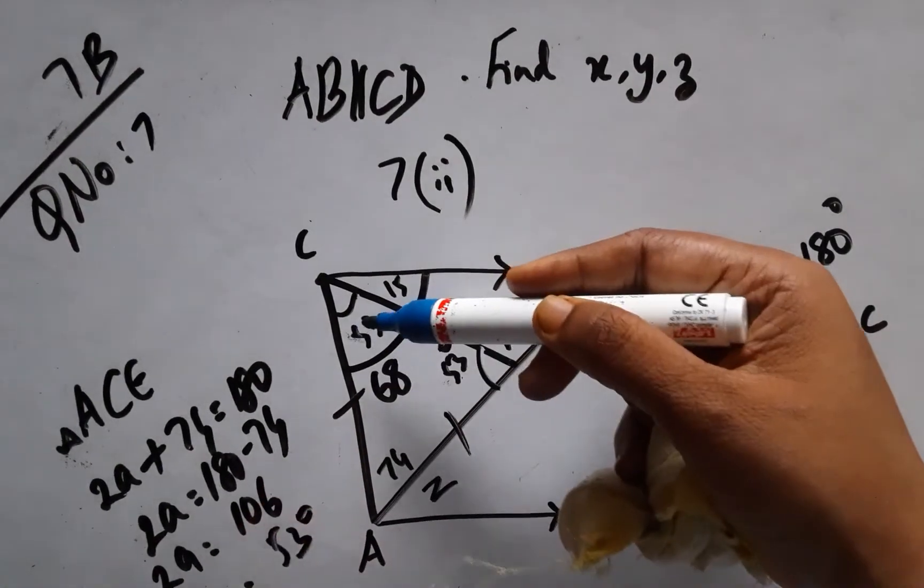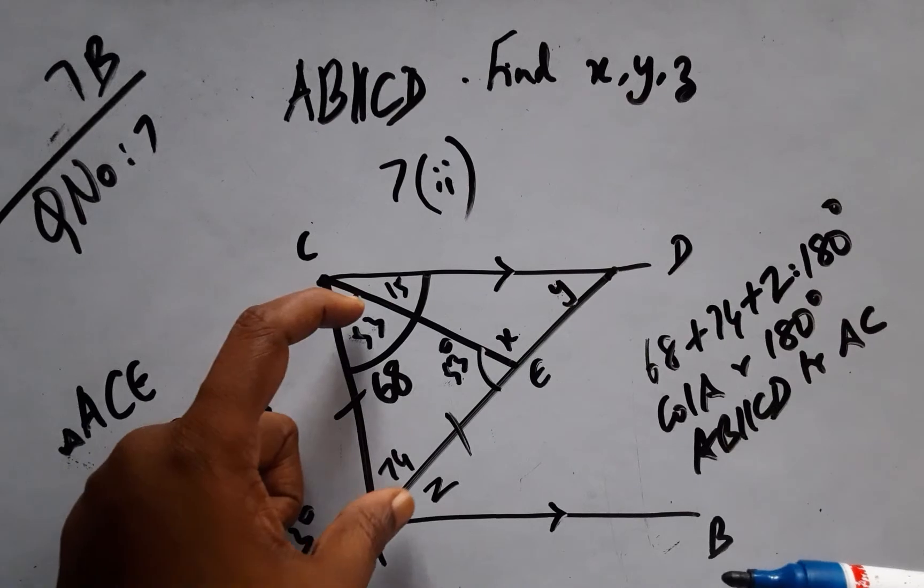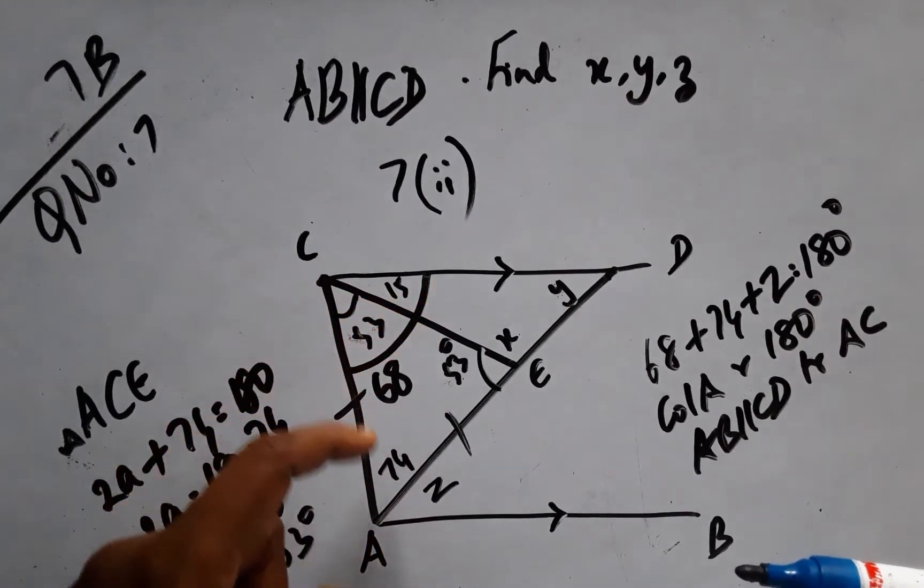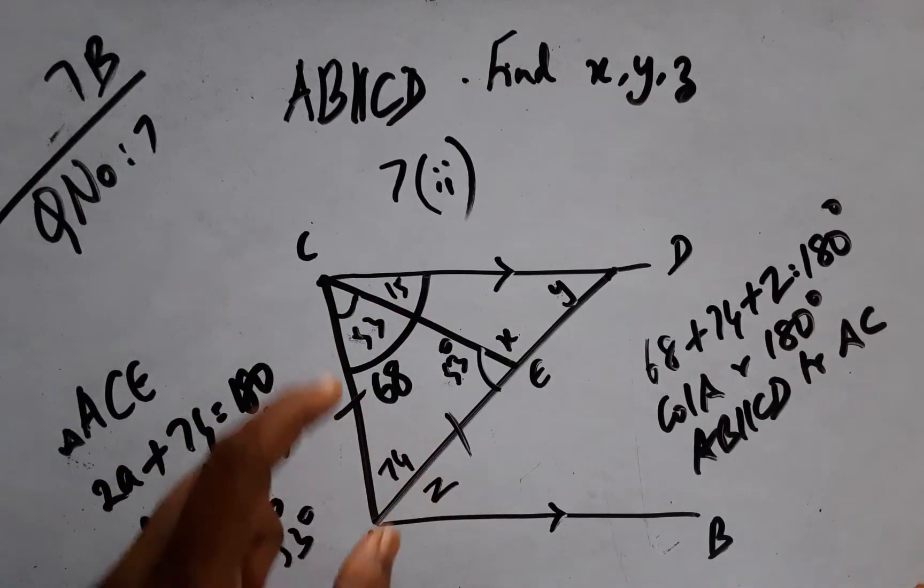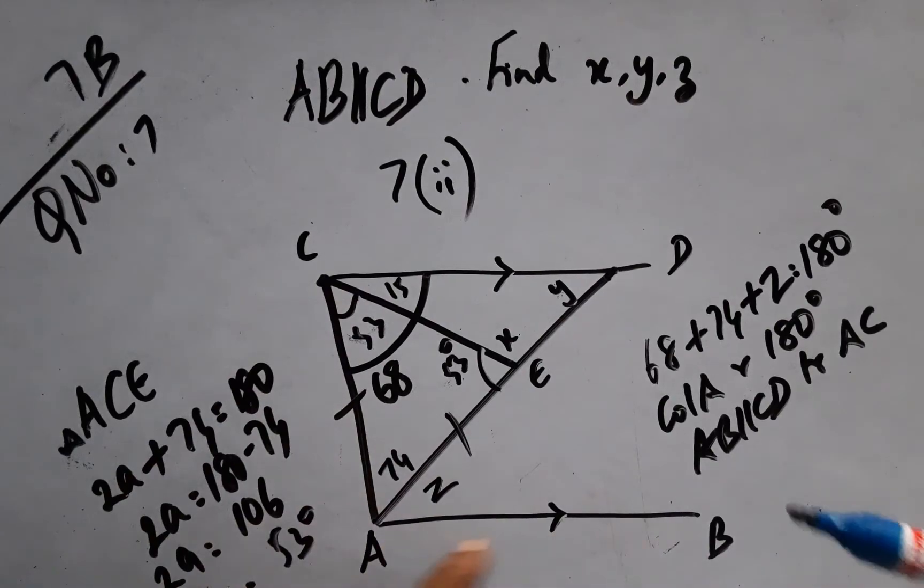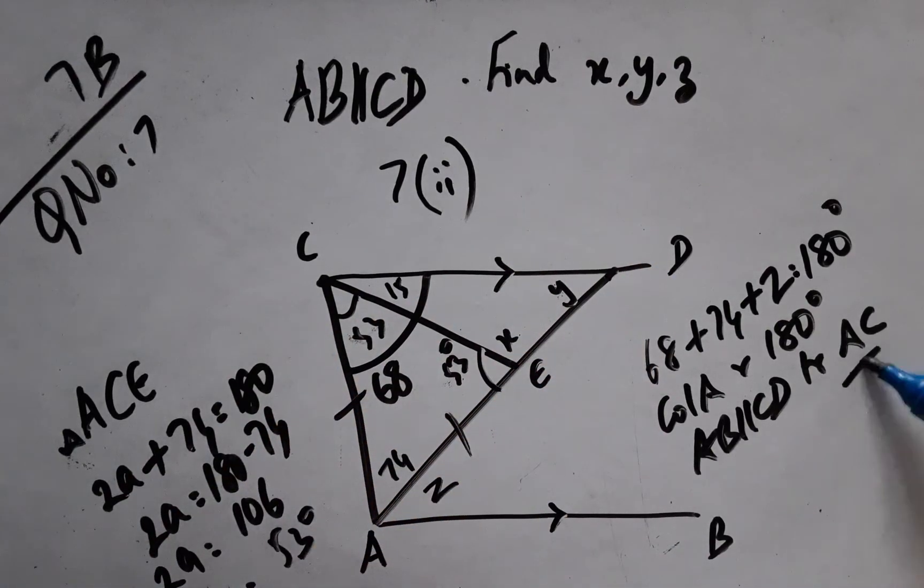Now the second problem here is, these two form the co-interior angles. This entire angle and this entire angle, they are the co-interior angles for AB parallel CD with transversal AC.